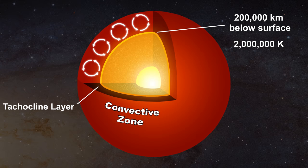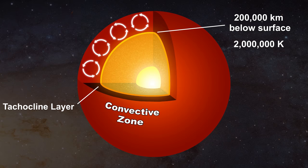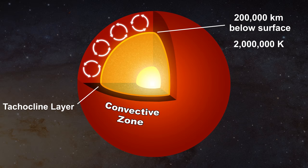For now suffice it to say that the mere existence of a tachocline layer is sufficient evidence that the body of the Sun cannot be gaseous. Different star types are believed to differ from the Sun by the size and content of their core, the radiative zone and their convective zone.